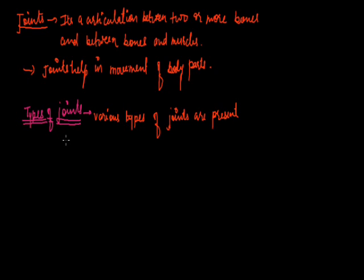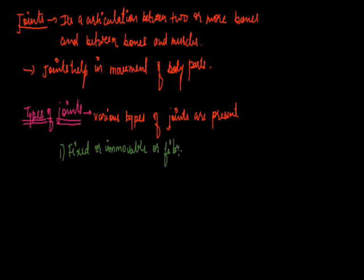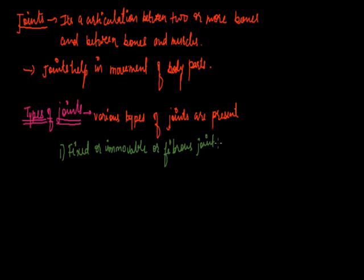The first type of joint is named the fixed, immovable, or fibrous joint. As its name suggests, in this type of joint, movement is absent between the bones.